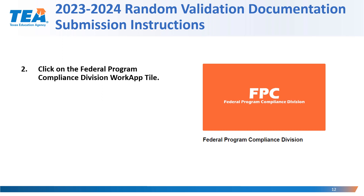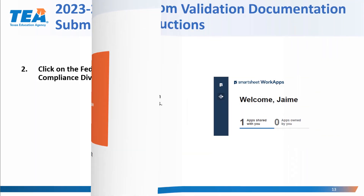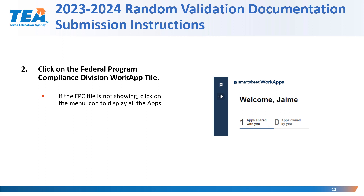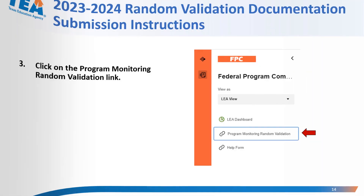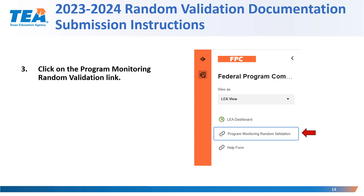Once you have logged into the Department of Grant Compliance and Administration WorkApp system, you will click on the Federal Program Compliance Division Random Validation WorkApp, as shown on the right. If you are not able to locate the Federal Program Compliance Division WorkApp tile, you may want to try clicking on the menu icon in the shape of a diamond on the left-hand side of your screen to display all the WorkApp tiles you have access to. After clicking on the tile, you will be given access to the Federal Program Compliance Division WorkApp, and you should click on the Program Monitoring Random Validation link.